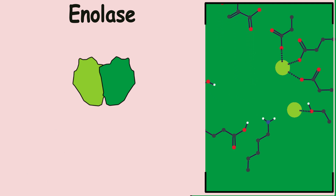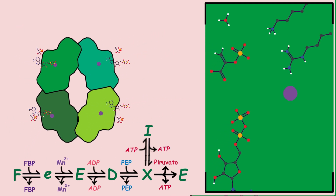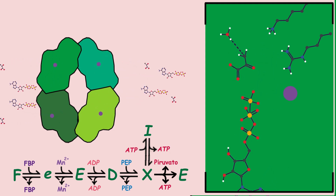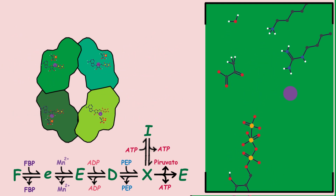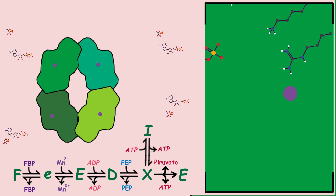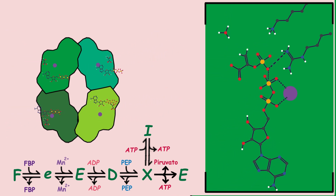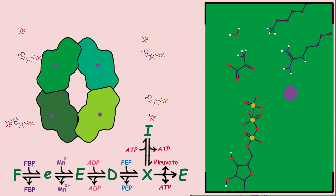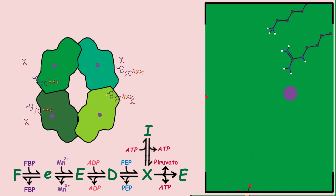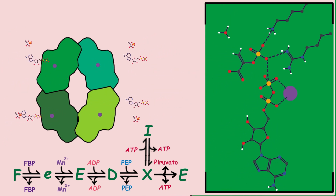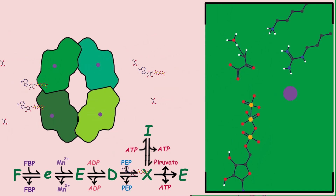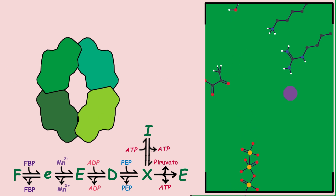The reaction is reversible. The last reaction is carried out by pyruvate kinase; four of them bind to form a tetramer. The protein takes phosphoenolpyruvate and transfers its phosphate to an ADP, forming ATP and pyruvate. The reaction requires a manganese ion and is not reversible. Pyruvate kinase is allosterically inhibited by ATP and activated by fructose bisphosphate.